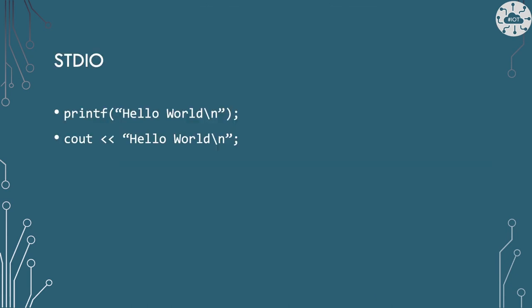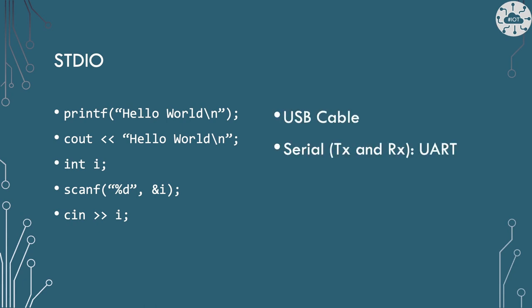Standard IO is where we send telemetry when we do something like printf in C, or send something to cout in C++. Of course, we can read from standard IO too, though we tend to do less of that on microcontrollers — so we could use scanf or cin. Our build configuration sets where standard IO will go: either over the USB cable to a host computer, or over a serial cable with a transmit and receive wire, and normally a ground wire too.